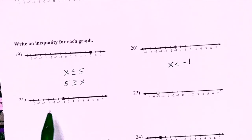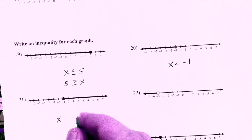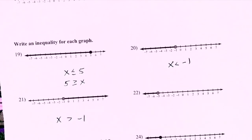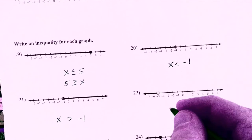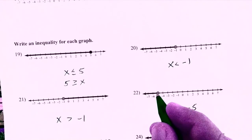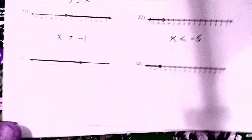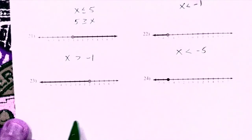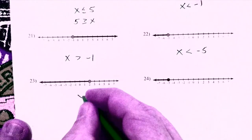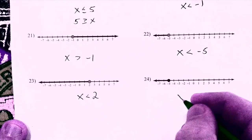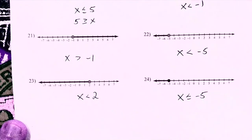From the graph you can say: there's always going to be an x, you put the number the dot is on, and figure out the correct inequality sign. Hollow dot on negative one going right: x is greater than negative one. Next one: hollow dot on negative five going left — not equal to, because it's not a solid dot — so x is less than negative five. The last two: x is less than two, and x is less than or equal to negative five. That's going from a graph to an inequality.